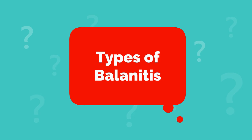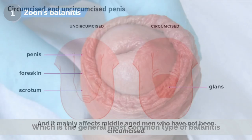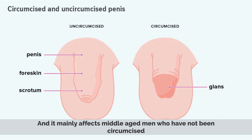There are three types of balanitis. The first is Zoon's balanitis, which is the most common type, and it mainly affects middle-aged men who have not been circumcised.